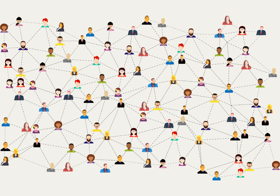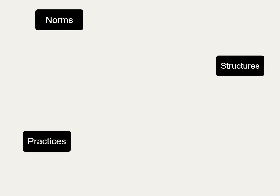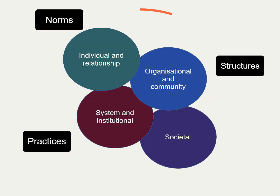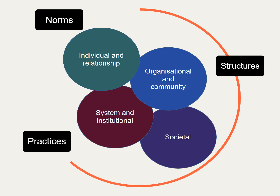The theory of this model is that behaviours both shape and are shaped by the social environment. These are what we know as the norms, structures and practices that reinforce gender equity. Social norms exist within each complex level of the model, from the individual level through to the societal level, each impacting and being impacted on by the others.